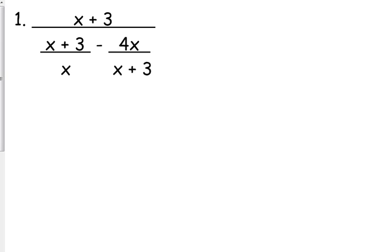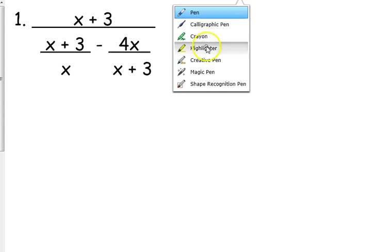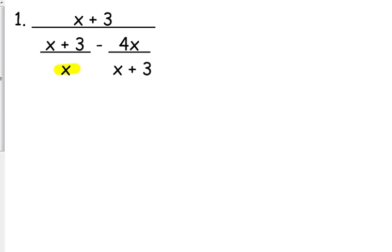So, let's do some identifying right here. This is what I call a little denominator. This is what I call a little denominator. The numerator, x plus 3, technically doesn't have a little denominator.